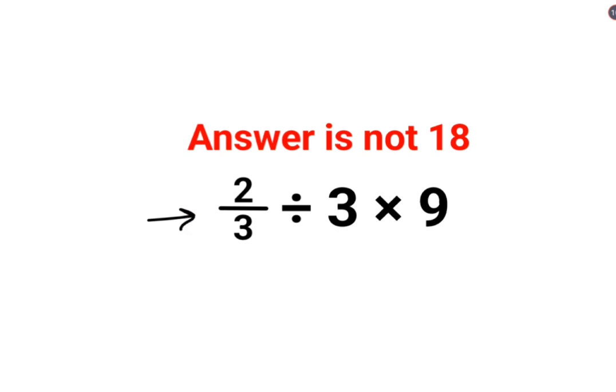A lot of people think that we can directly cancel this and this. So we are left with 2 multiplied by 9 and the answer is supposed to be 18.